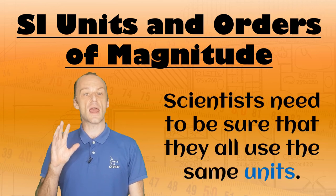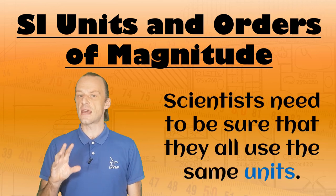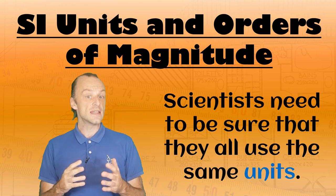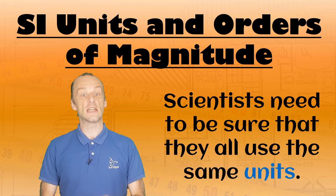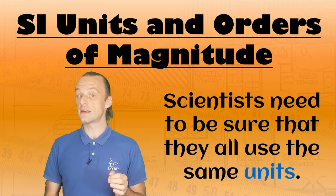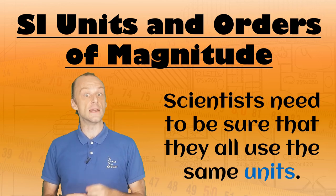Scientists need to be sure that they are all working together in the same units. A unit is basically a way of counting something in fixed amounts, and they work best when they are standardized. In other words, when every unit is always exactly the same.